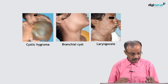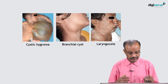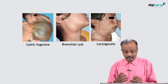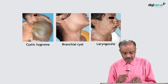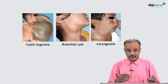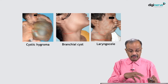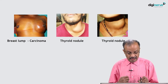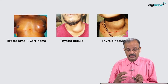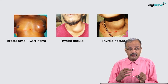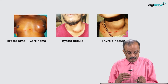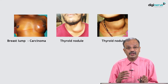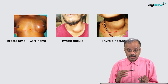Looking at the figures: cystic hygroma occurs in newborns; branchial cysts occur in adolescents around age 20 and are congenital. A trumpet blower in his 50s may develop laryngocele swelling. Breast lump occurs typically in female patients. Thyroid nodules occur commonly in females, but when they occur in males it is very important because many thyroid nodules in males could be malignant. So you have to give real importance to thyroid nodules in males and be suspicious of malignancy.